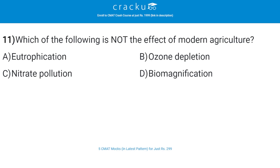Which of the following is not an effect of modern agriculture? The correct answer is B — ozone depletion. Ozone depletion is not an effect of modern agriculture; ozone layer depletion takes place due to damage in the ozone layer from other causes.